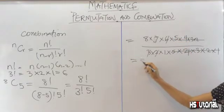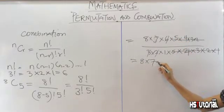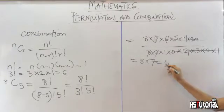So we are left with 8 times 7. 8 times 7 gives us 56. So 8 combination 5 equals 56.